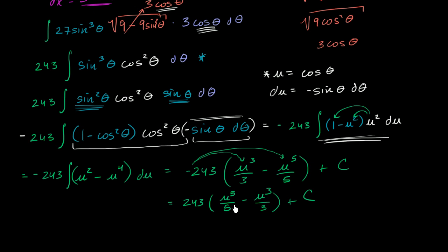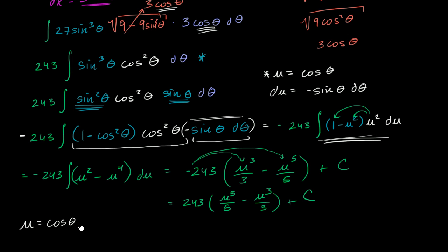But now we need to go and undo everything — we have to undo the substitutions. The last substitution we made was u equal to cosine theta. We might just substitute u with cosine theta, but then we'd have everything in terms of cosine theta, which still doesn't get us to x. So the ideal is to somehow express u directly in terms of x.